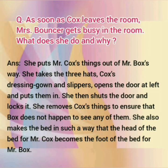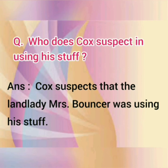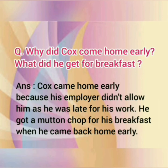Who does Cox suspect of using his stuff? Cox suspects that the landlady Mrs. Bouncer was using his stuff. Why did Cox come home early? What did he get for breakfast? Cox came home early because his employer didn't allow him as he was late for his work. He got a mutton chop for his breakfast when he came back home early.